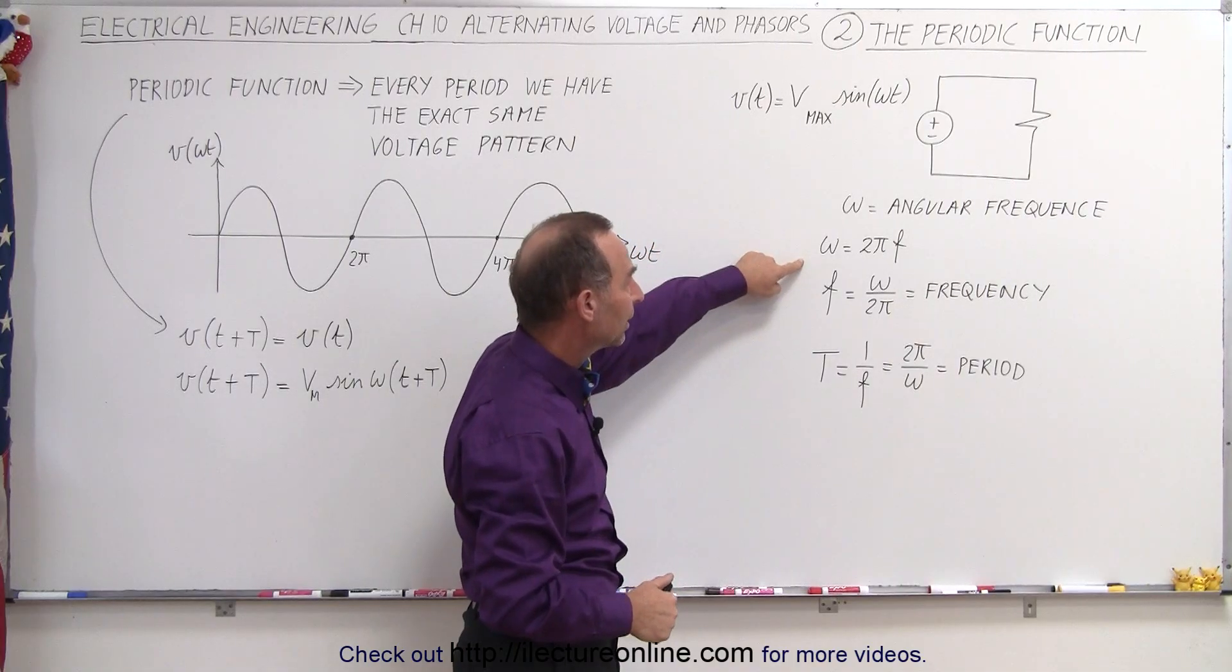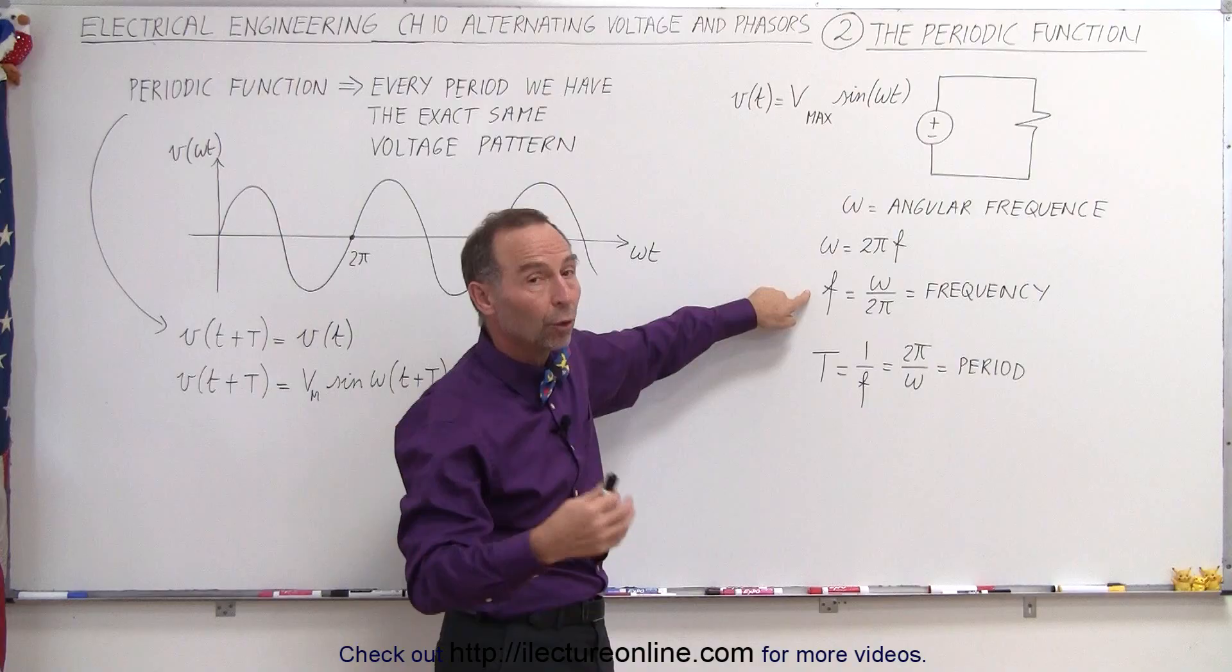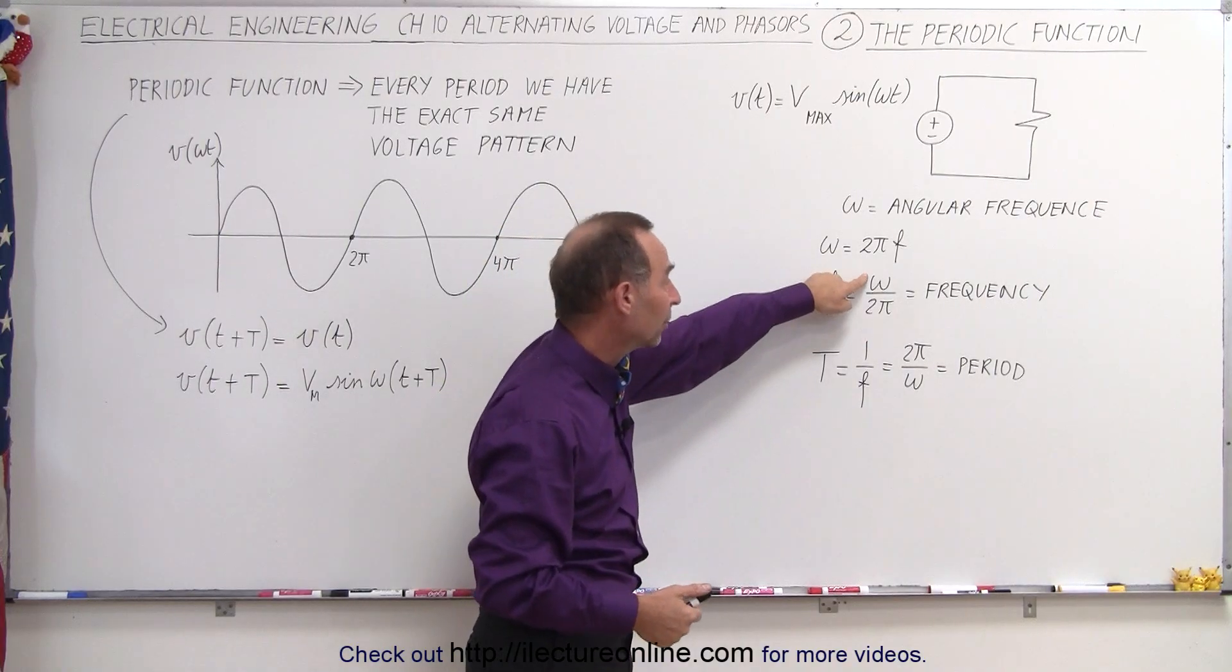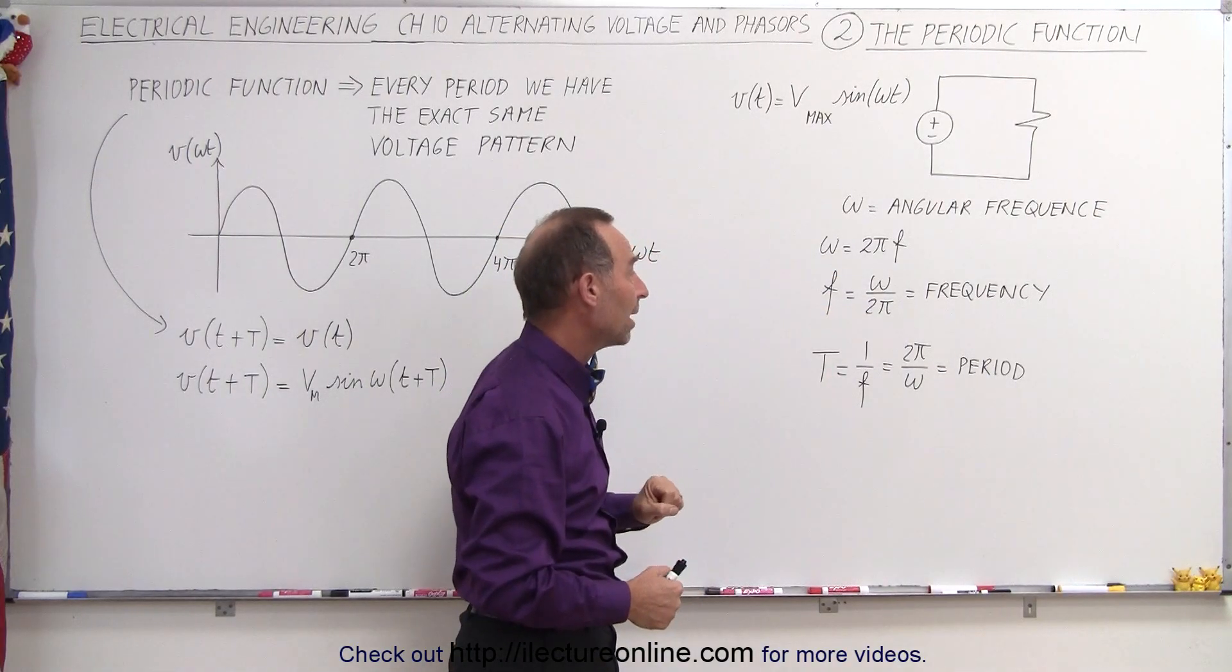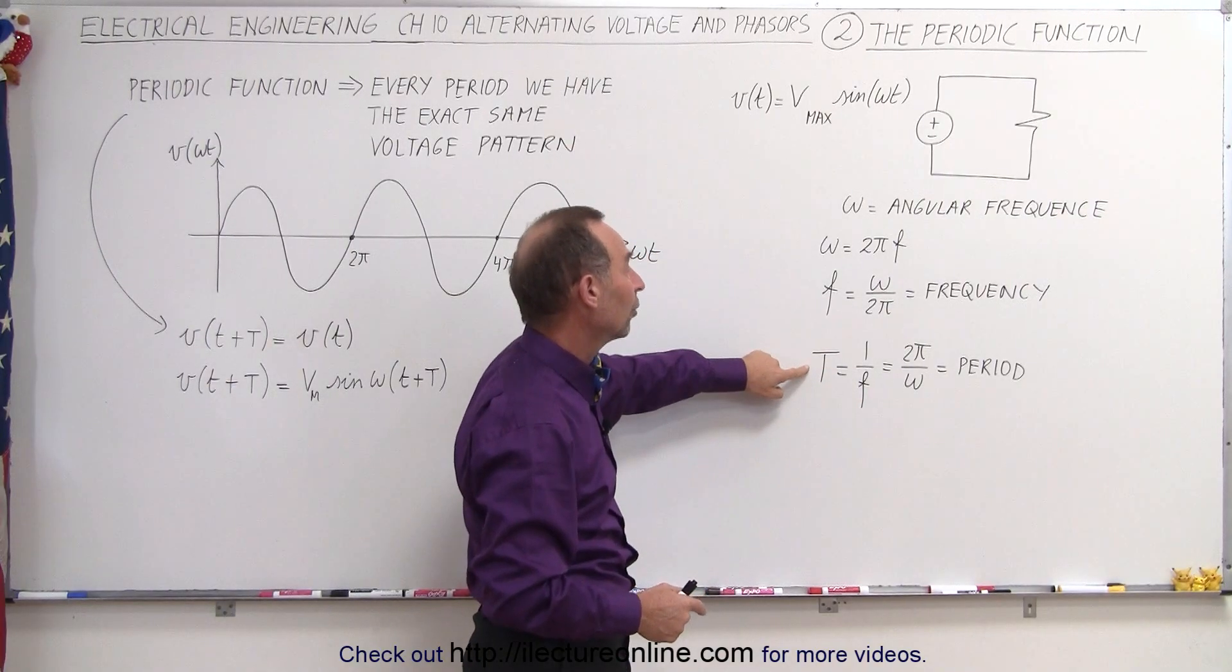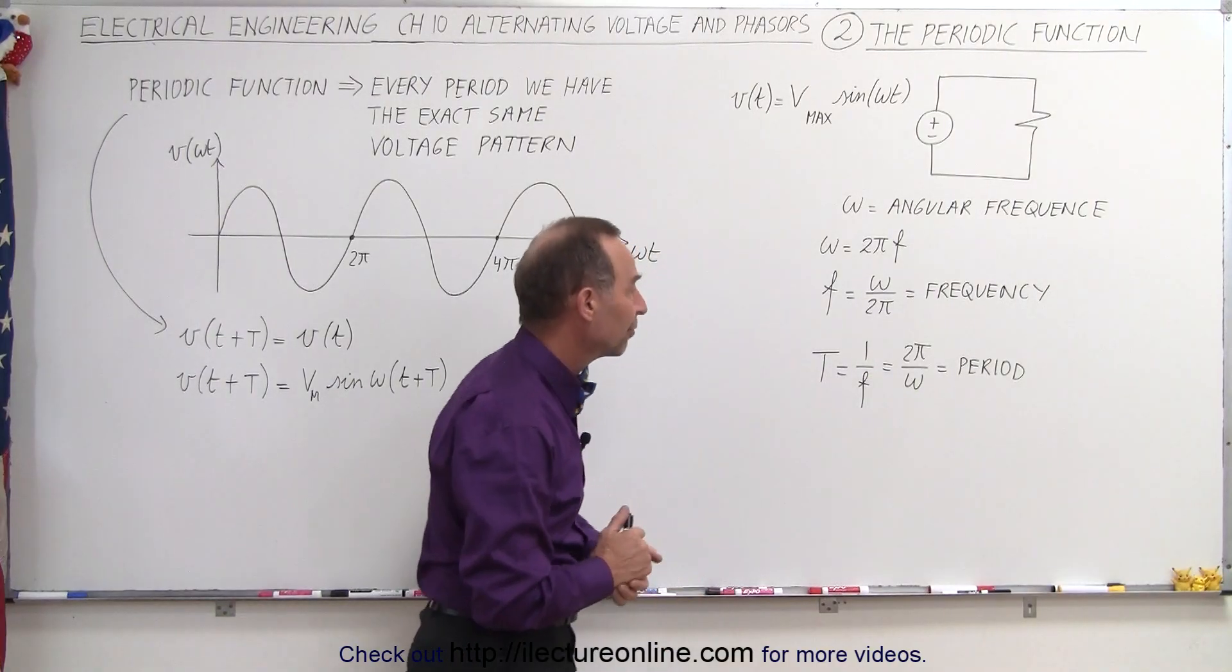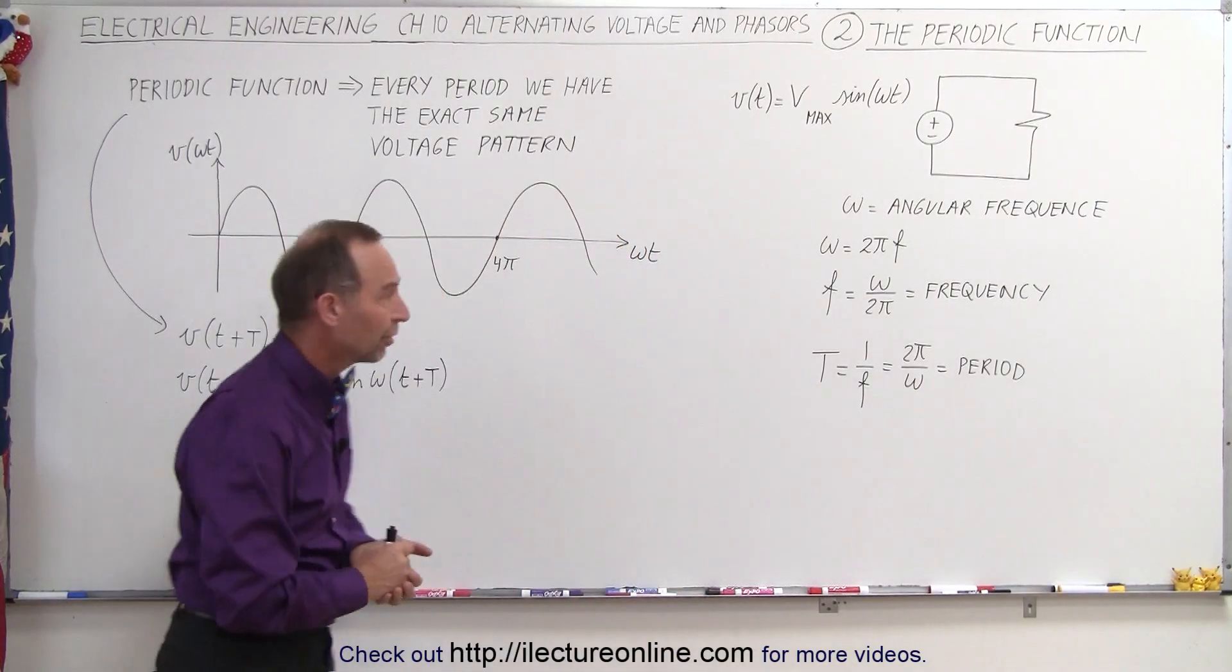And since ω can be expressed as 2π times the frequency, the frequency can also then be expressed in terms of the angular frequency divided by 2π. And since the period of the function is equal to the inverse of the frequency, the period can then also be written as 2π divided by ω. It's called the period of the function.